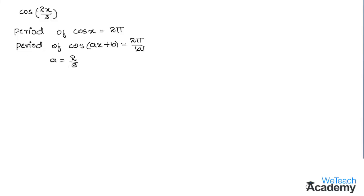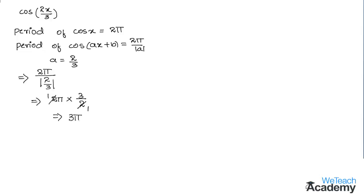The period of this function will be equal to 2π divided by |a|. Here the value of a is 2/3, so we get 2π divided by |2/3|. Simplifying, we get 2π multiplied by 3/2, which gives us 3π as the period for the function cos(2x/3).